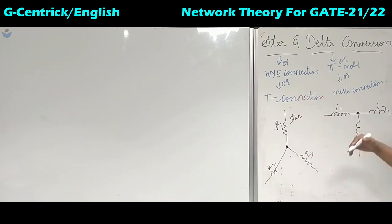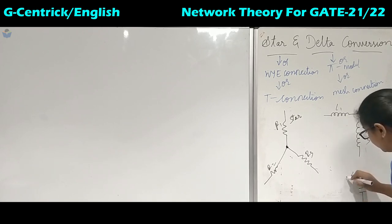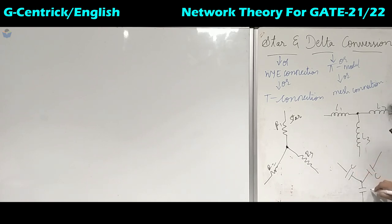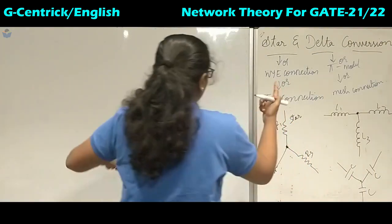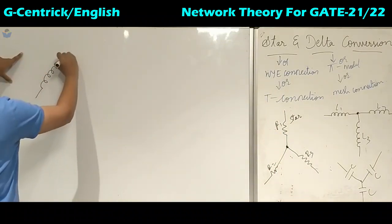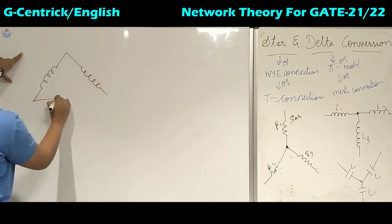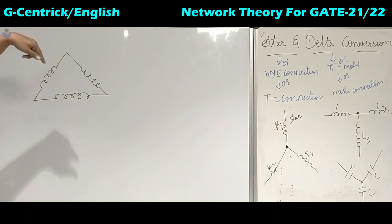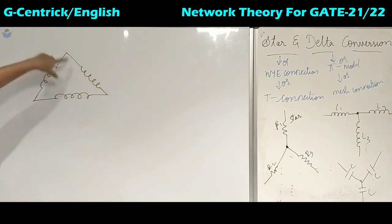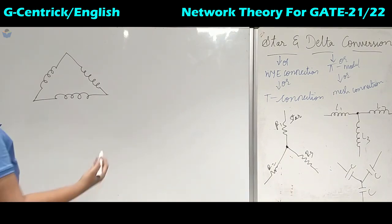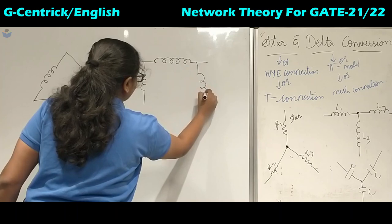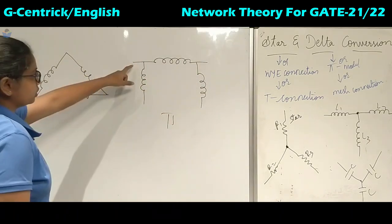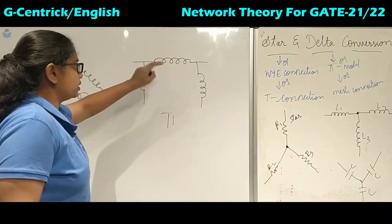It can be drawn the other way round also — we can use capacitors to draw the star in that orientation. Next, delta can also be drawn using inductors. This is the smallest closed loop path; it does not have any other loops inside this mesh. This is also called the pi model because it is in the shape of pi. So this is the delta connection.